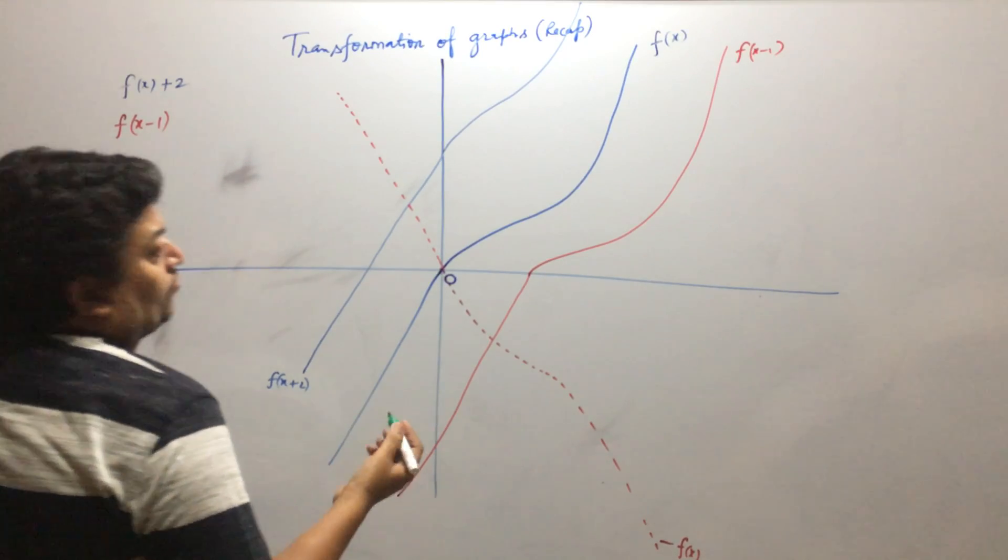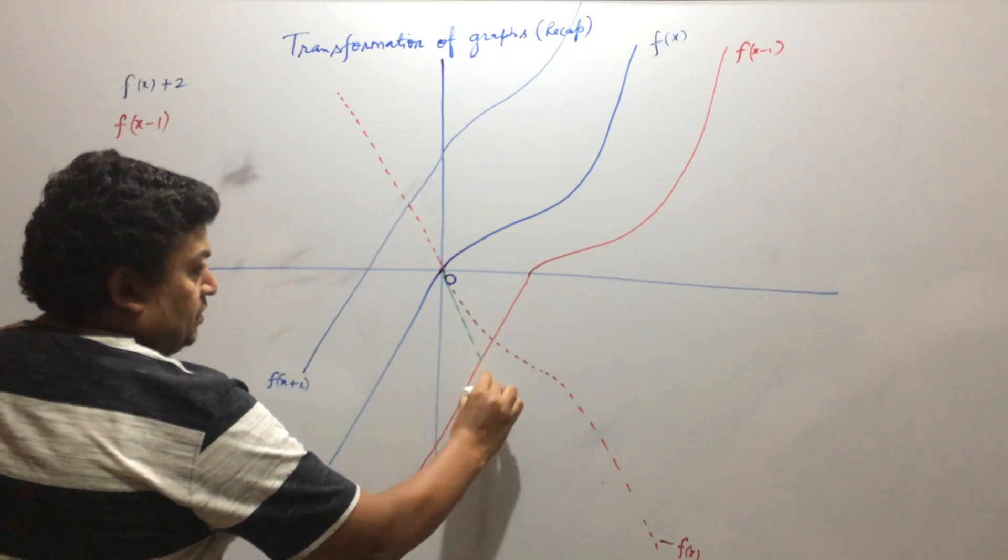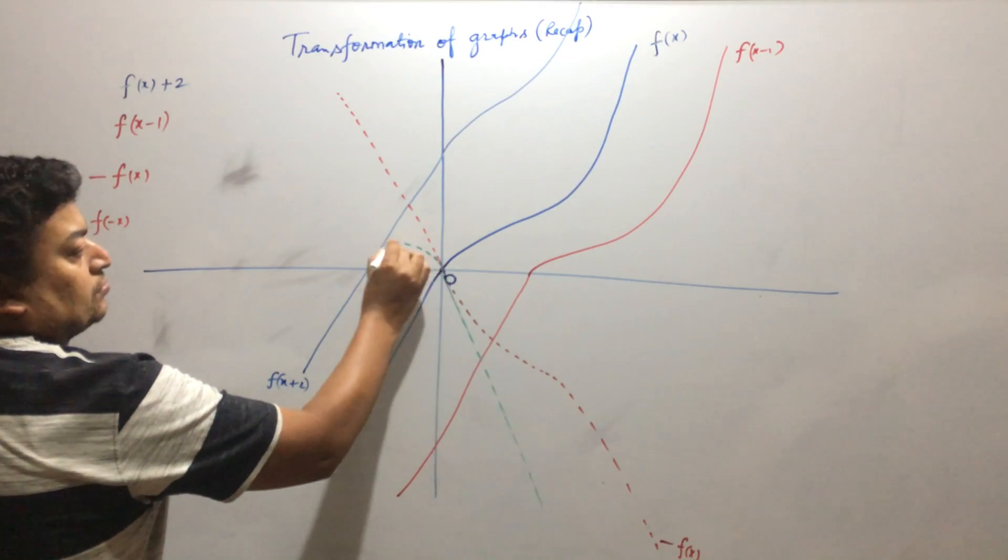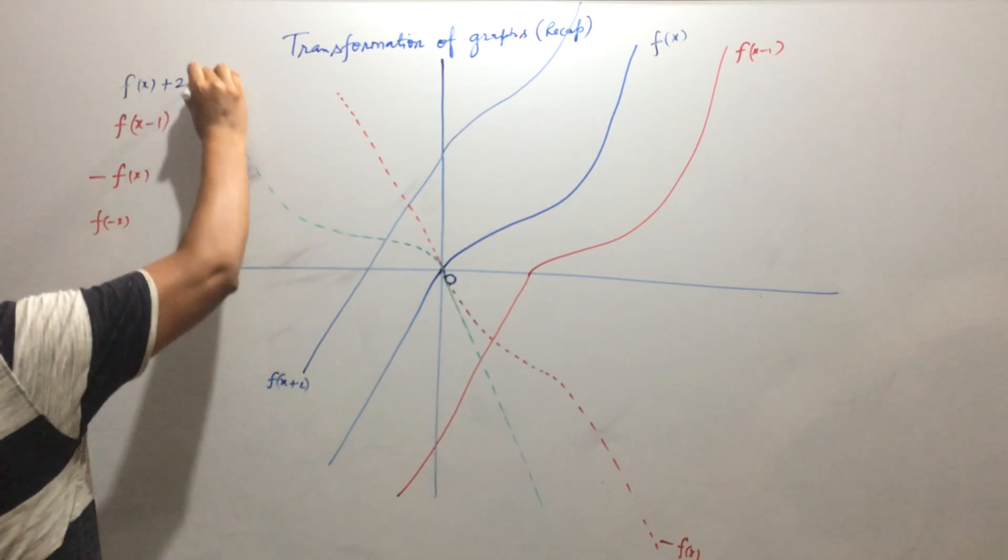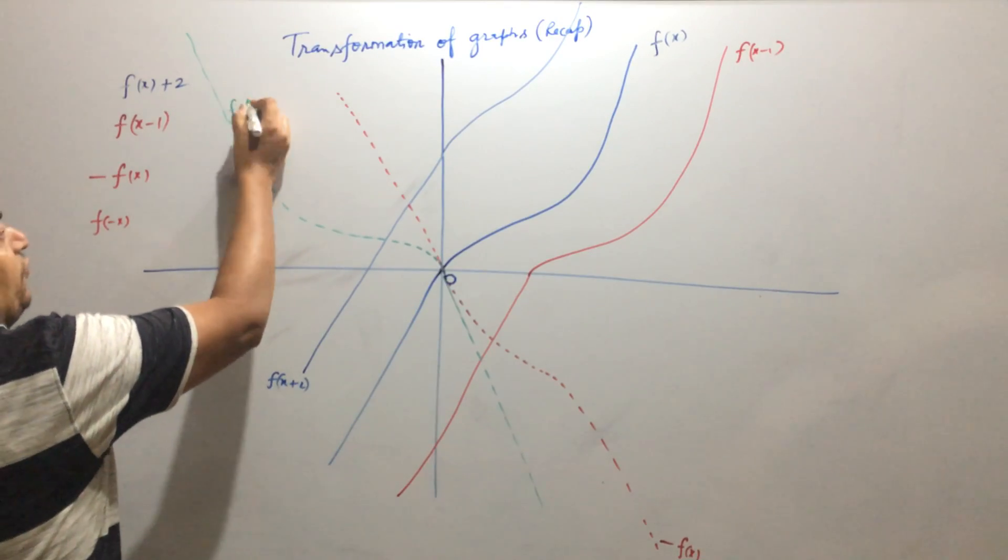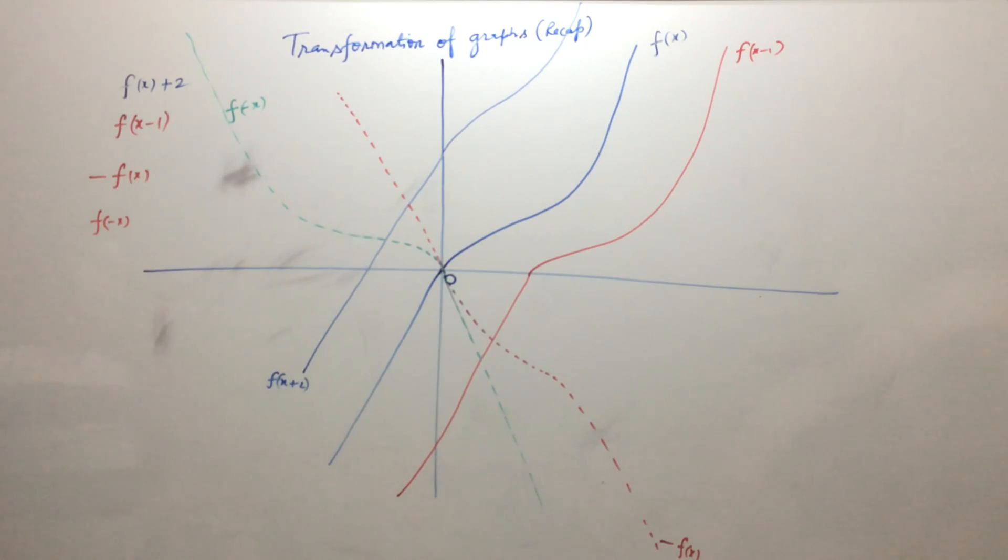Okay, so that will be like this. So this will be the graph of f of minus x.